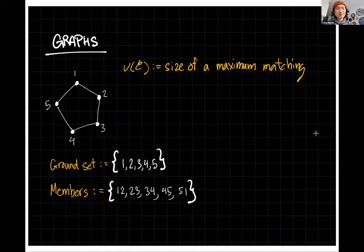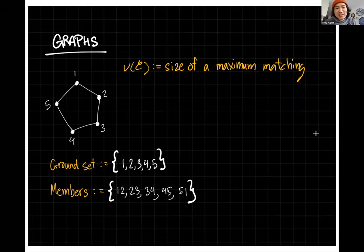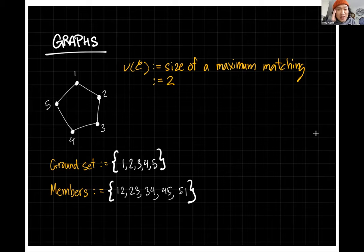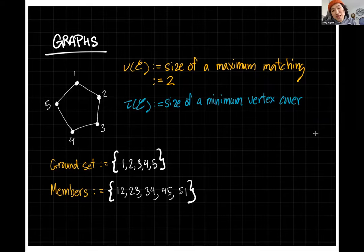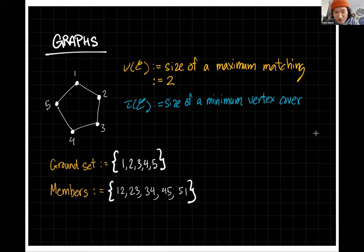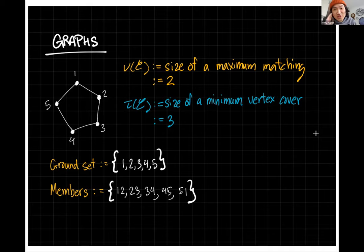For a graph, the packing number is the size of a maximum matching, since we need disjoint edges. In this particular example we can find two disjoint edges, so the packing number is two. The covering number is the size of a minimum vertex cover. In this example it is three — you need three vertices to hit every edge. So these numbers are not necessarily equal, and here the covering number exceeds the packing number.